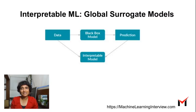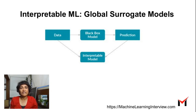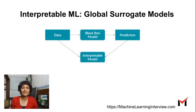To summarize, we looked at global surrogate models to interpret machine learning models. The basic idea is that our actual model could be more complex — we call it the black box model — and we train a simpler, interpretable surrogate model with the same training data, using the predictions from the black box model as targets. There are many other ways of interpreting ML models and we will look at some of these in other videos. Thank you.